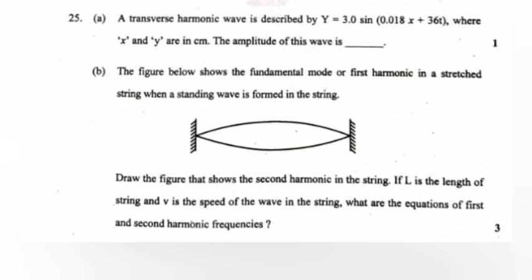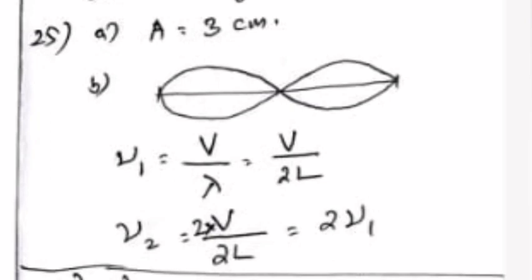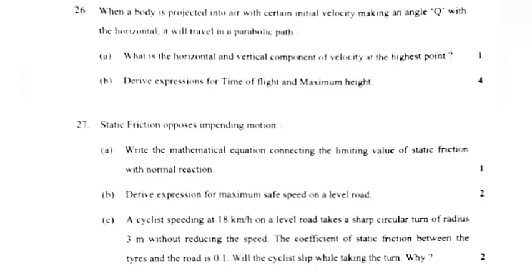Draw the figure that shows the second harmonic in the string. If l is the length of string and v is the speed of the wave, what are the equations of first and second harmonic frequencies? Answer: Amplitude equals 3 cm. v_1 equals v by lambda equals v by 2L. v_2 equals 2v_1.